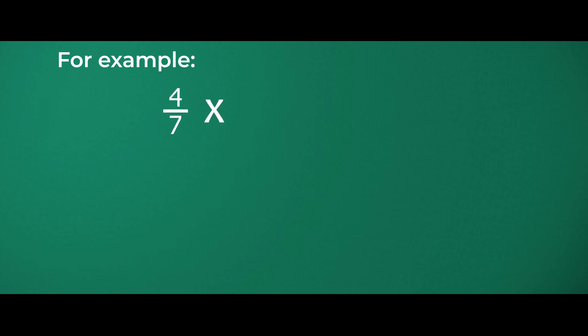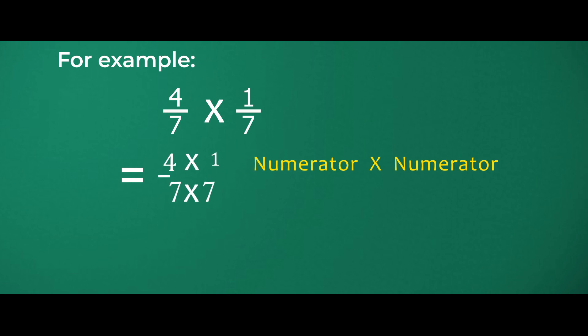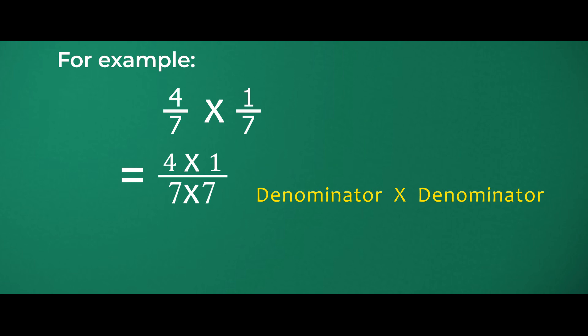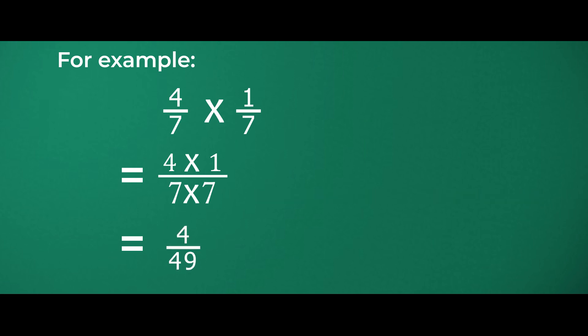For example, four-sevenths is being multiplied by one-seventh. We multiply numerators by numerators: four times one. And we multiply denominators by denominators: seven times seven. Now we get four over forty-nine.